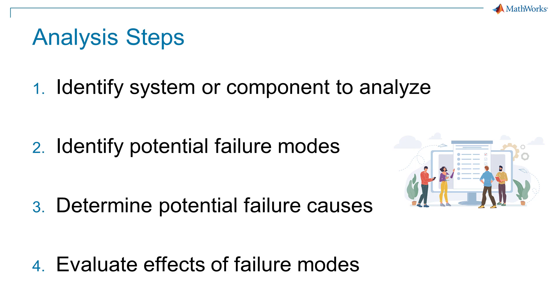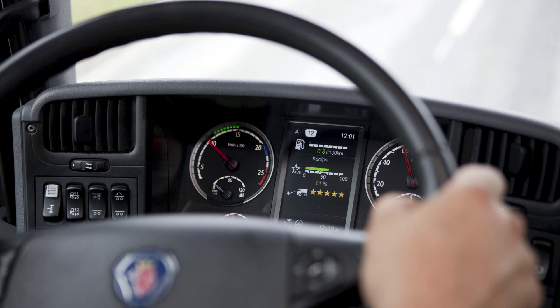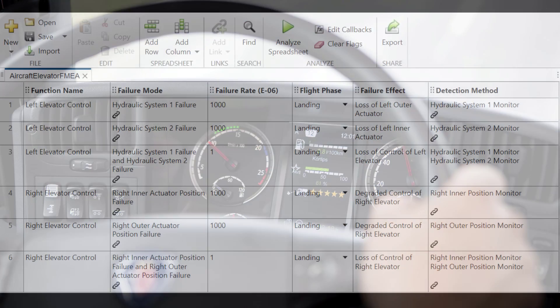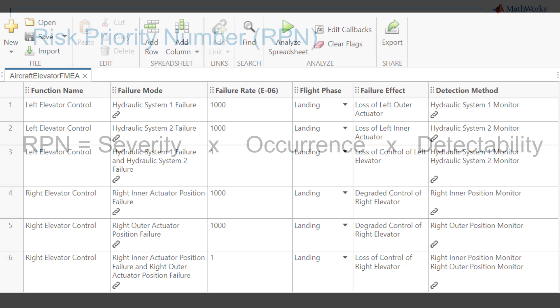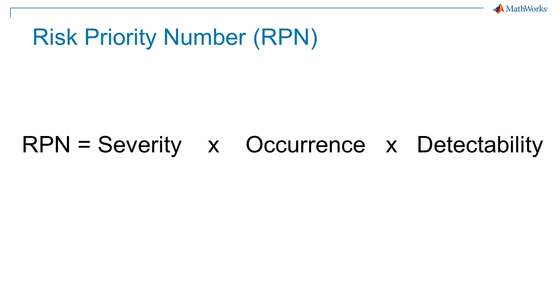Step 4: evaluate the effects of failures. Assess the potential consequences of each failure mode. This involves understanding the impact on the system, the end user, and related systems or processes. In many cases, an FMEA will include other data points. A few common metrics are the failure mode's severity, occurrence or probability, and detectability. You can multiply these metrics to create a risk priority number to prioritize failure modes.